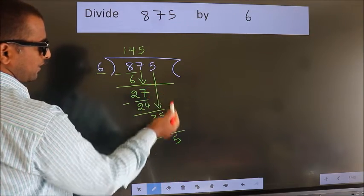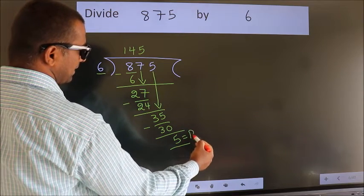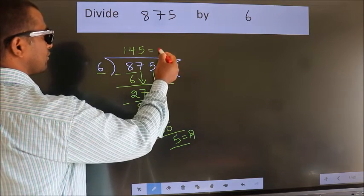No more numbers to bring it down. So, we stop here. This is our remainder. This is our quotient.